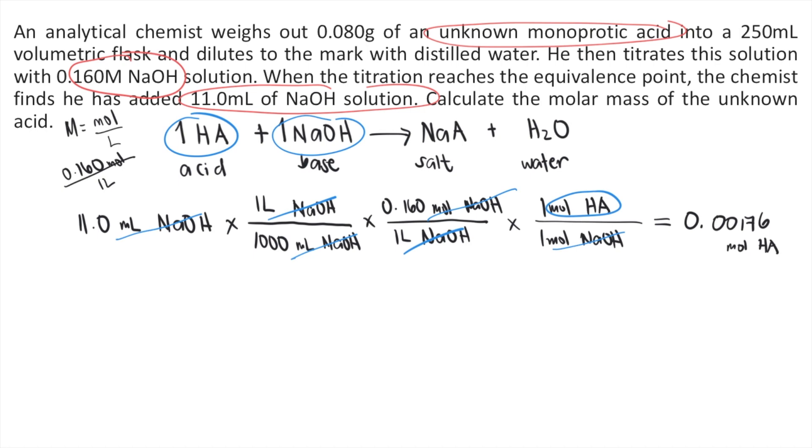Now that we have the moles of acid, we can solve for the molar mass of the unknown. Remember, molar mass is grams per mole. We are asked for the molar mass of the acid. How many grams of acid are given? We are given 0.080 grams according to the problem.